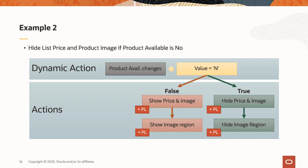So it ends up looking like this. When product available changes and its value is no, then first we'll hide the items price and image, and then we'll hide the region. The reason we needed two actions is because sometimes an action can only work with items or a region, so we needed two hides in this case. And of course, we'll do the opposite if the value is not no.